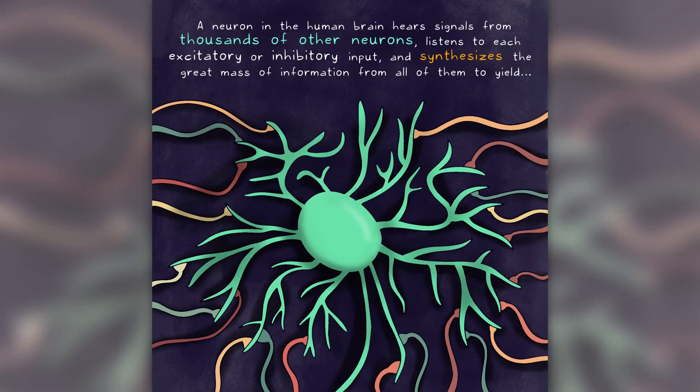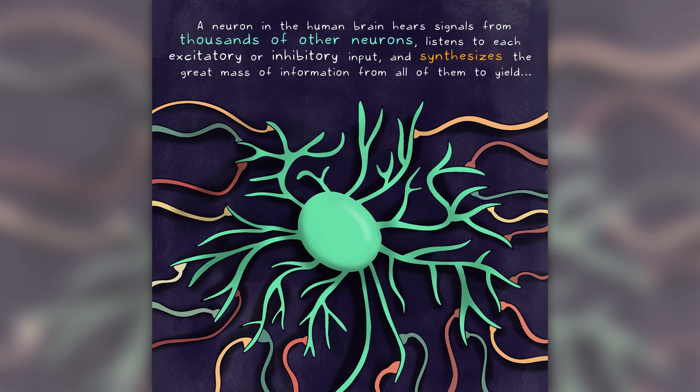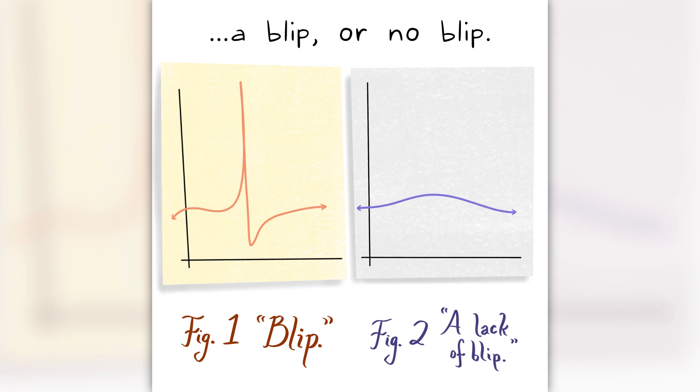A neuron in the human brain hears signals from thousands of other neurons, listens to each excitatory or inhibitory input, and synthesizes the great mass of information from all of them to yield up-blip, or no-blip.